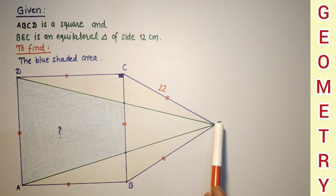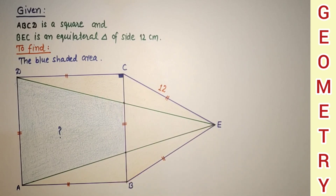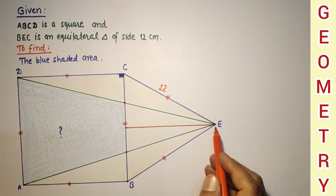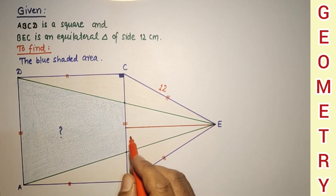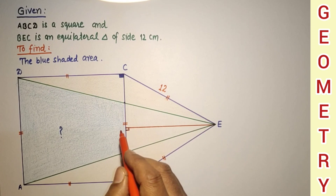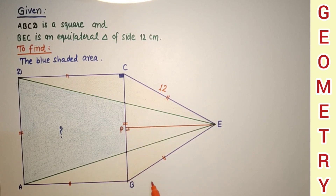Draw a perpendicular from point E to side BC. Let the perpendicular drawn be EP, where P is the foot of the perpendicular. Let this other point be Q.